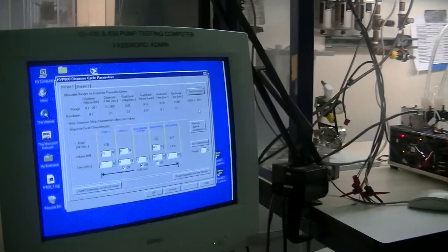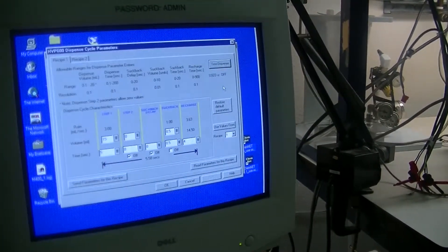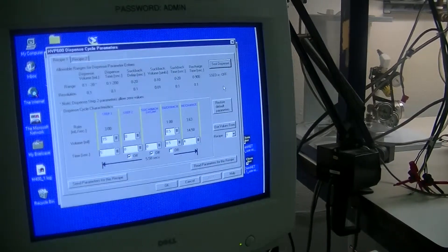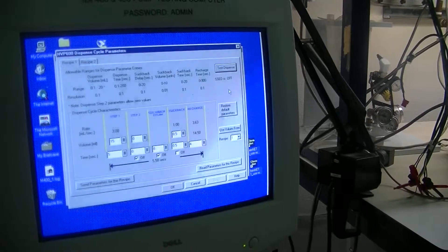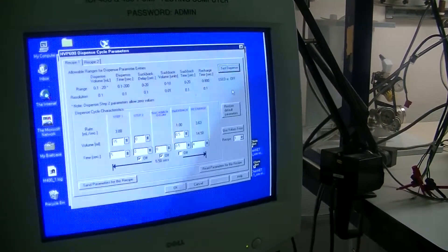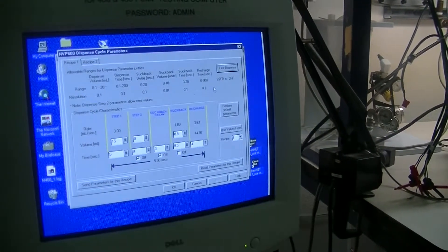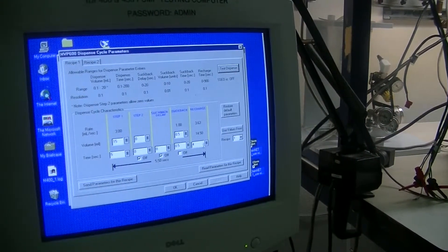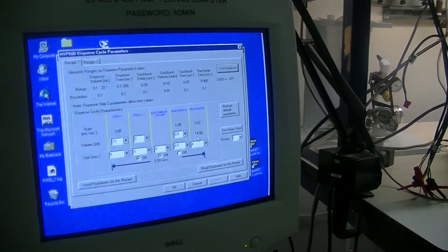We have the ChemNet software up right now. We're in the dispense cycle parameters page, and we have it set up to pump 15 milliliters with a time of five seconds. So the rate is about three milliliters per second. We're refilling a little quicker but we're not really putting all 15 milliliters back in. We're only doing 14 and a half for our test.